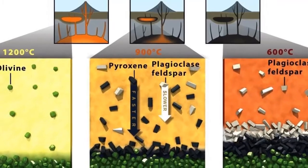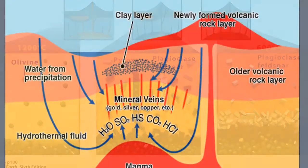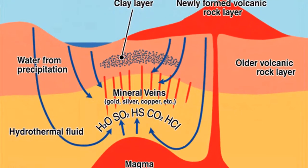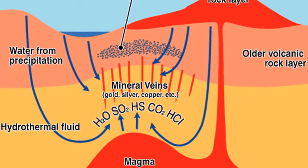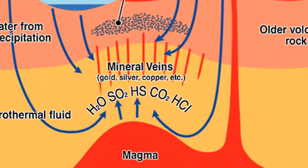When magma cools, it is generally the silicon and oxygen atoms that link together first to form silicon-oxygen tetrahedra, the basic building blocks of the silicate minerals.